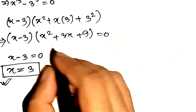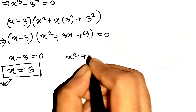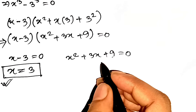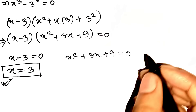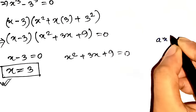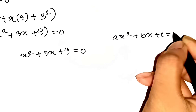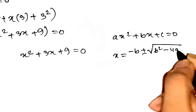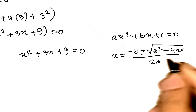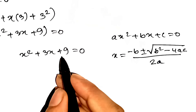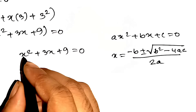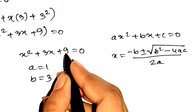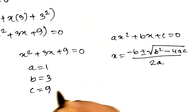Here's where we roll up our sleeves. We've got the quadratic factor, x squared plus 3x plus 9 equals 0. We're going to bust out the quadratic formula to solve it. For any quadratic ax squared plus bx plus c equals 0, the solutions are x equals negative b plus or minus the square root of b squared minus 4ac, all over 2a. From x squared plus 3x plus 9, a equals 1, b equals 3, and c equals 9.